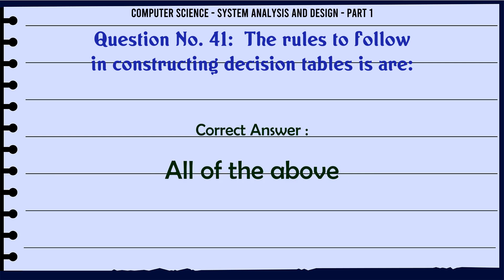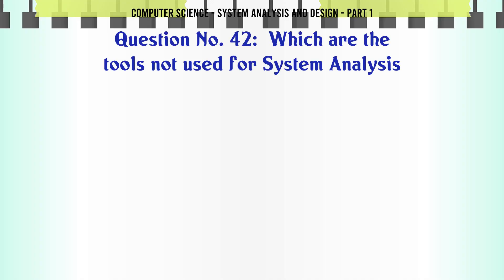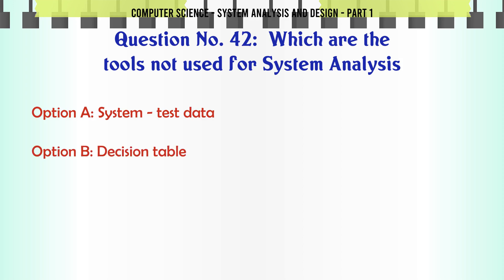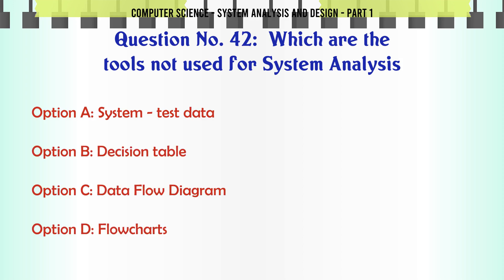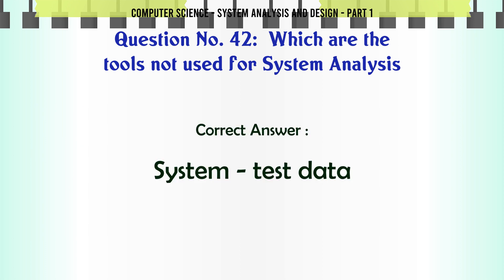Which are the tools not used for system analysis? A. System test data. B. Decision table. C. Data flow diagram. D. Flow charts. The correct answer is: System test data.